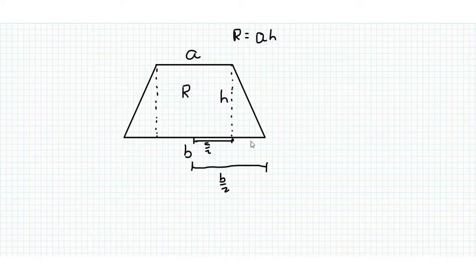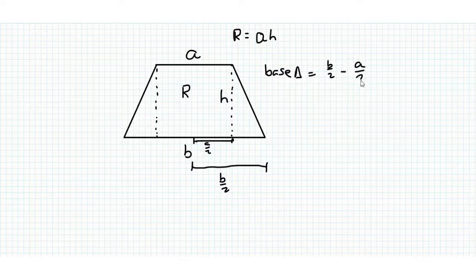So that means this base is B over 2, so the base of the triangle is equal to B over 2 minus A over 2.